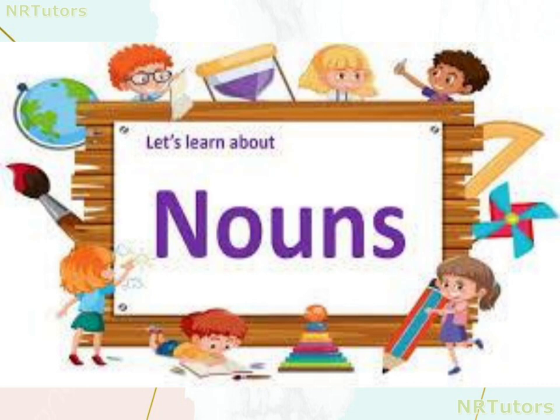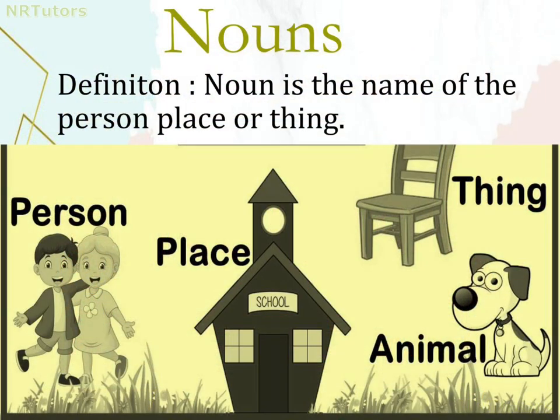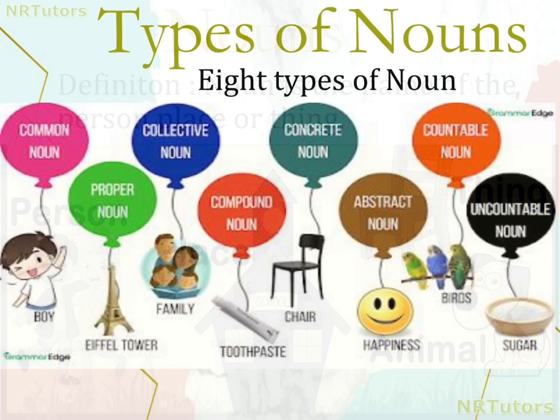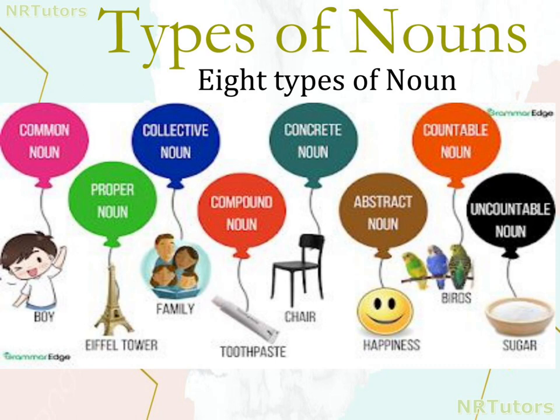So, let's start with its definition. What is noun? Noun is the name of a person, place, or a thing. Noun tells us something about a person or a place.